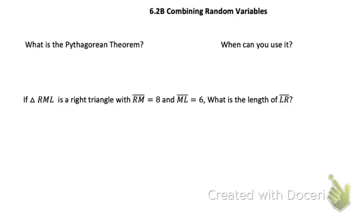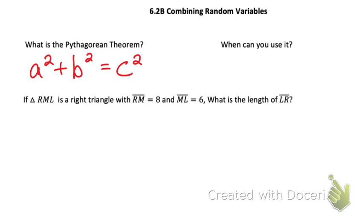To start, we're going to talk about the Pythagorean Theorem. What is the Pythagorean Theorem? A squared plus B squared equals C squared. And when can you use the Pythagorean Theorem? Only for a right triangle. It does not work in any other triangle.